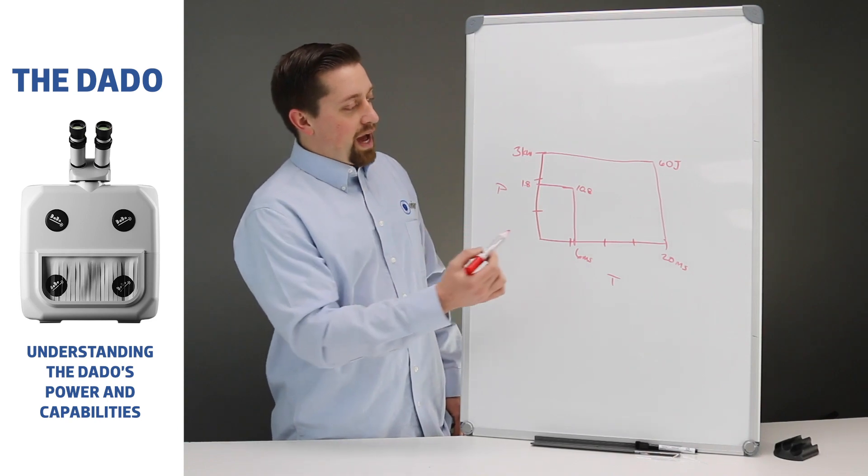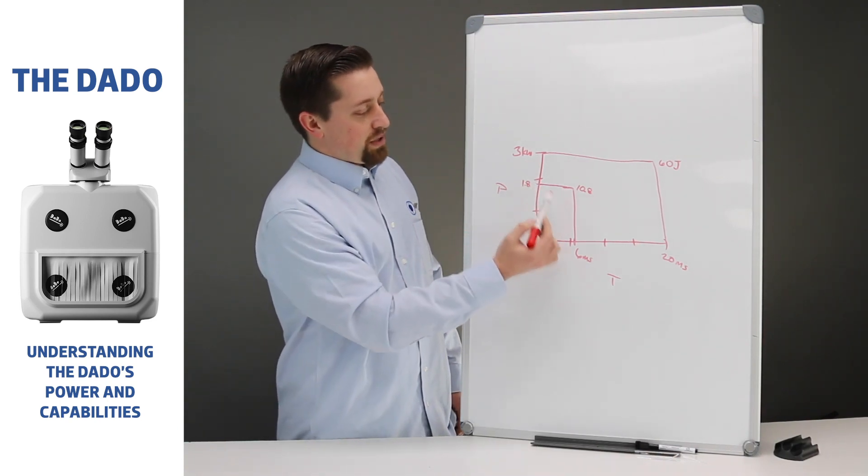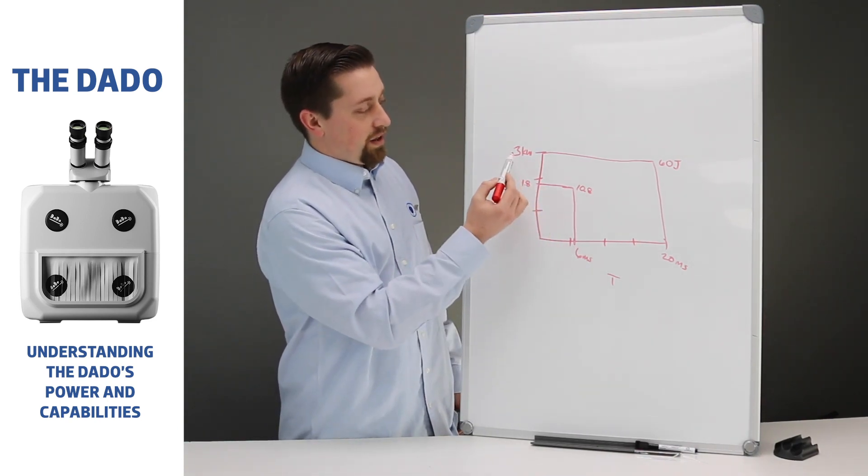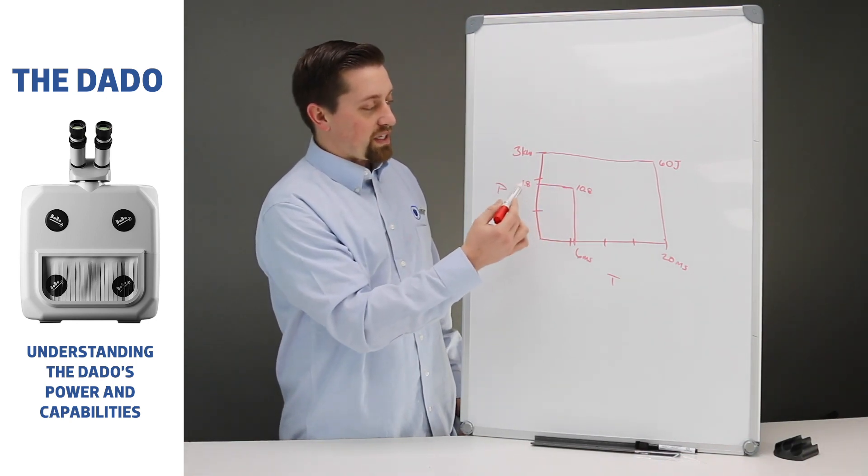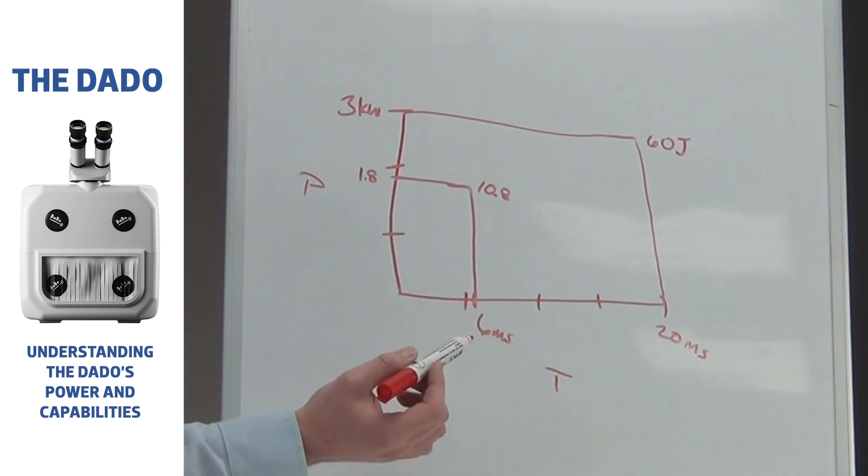But, it's not a true apple to apple because you can see this has a much higher peak to time than the 60 joule does. Meaning, there's a lot more punch and power behind the Datto. It just lacks the ability to keep it on longer.